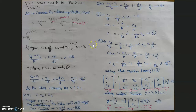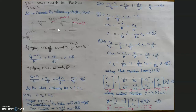State space is similar to the concept of transfer functions but quite different. Parameters like resistance and capacitance — taken as an example from an electrical system — affect the particular system and can be studied in detail. All higher-order differential equations can be converted into lower-order differential equations, which is a major objective of state space. Everything is represented in matrix form, making it easy to solve problems and understand which parameters affect the system.